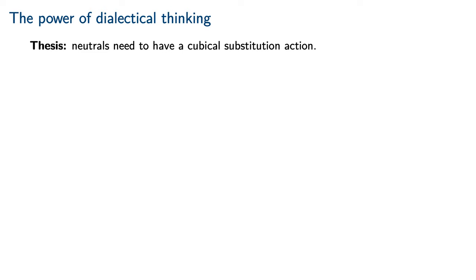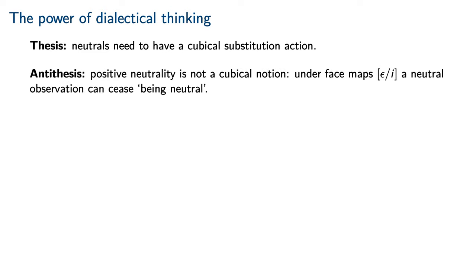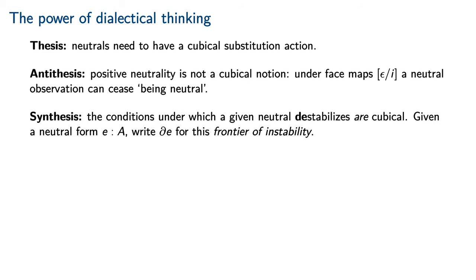Neutrals do need to have a cubical substitution action. However, our observations above indicate that positive neutrality is not actually a cubical notion. Under the face maps 0 for i and 1 for i, a neutral observation can cease being neutral. However,